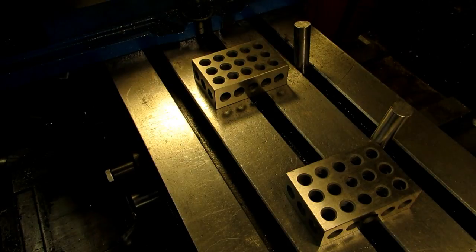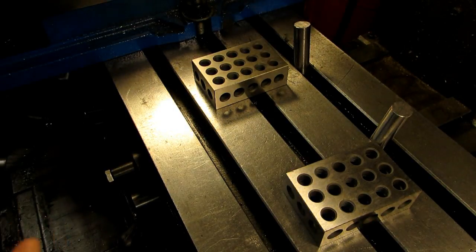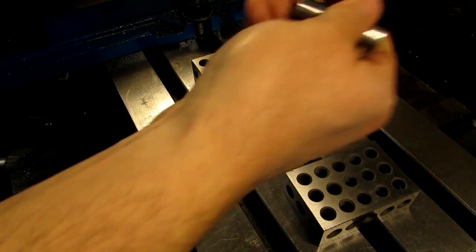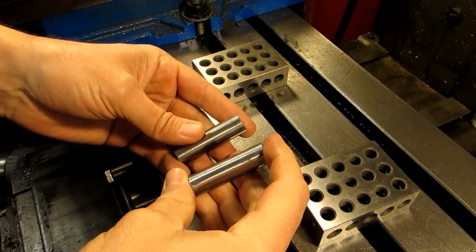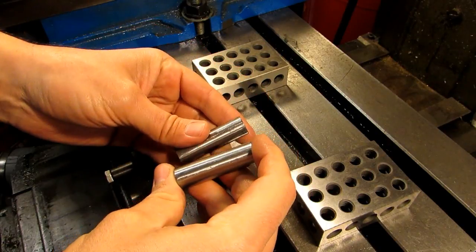Now, this is a Bridgeport, so the T-slots are five-eighths of an inch. But if you have a different machine, just make the pins to match your machine's T-slots. I just cut some pieces of five-eighths turned ground and polished rod for the pins since it's very accurate on the diameter.